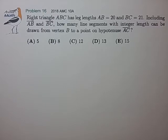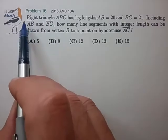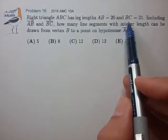Hi, this is problem 16 from the 2018 AMC 10A. Right triangle ABC has leg lengths AB=20 and BC=21.